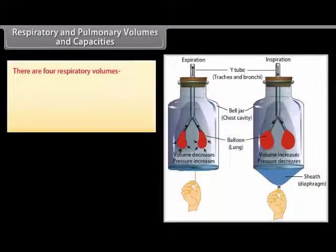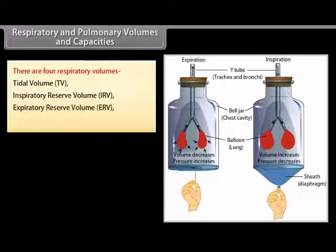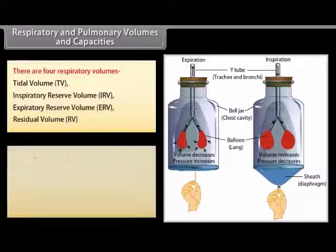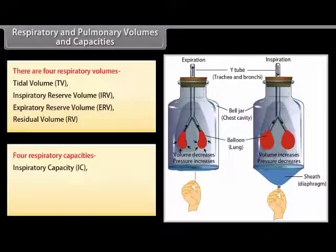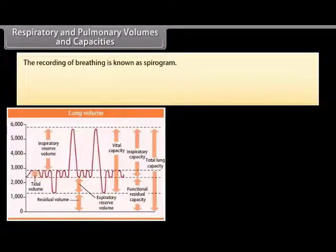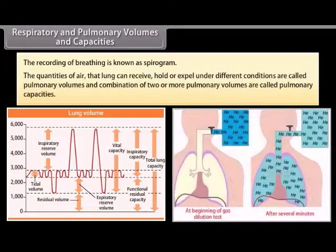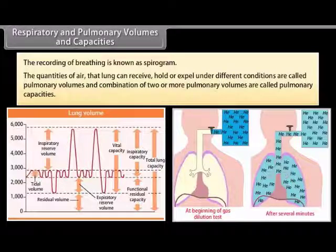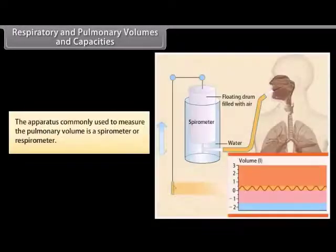There are four respiratory volumes: tidal volume, inspiratory reserve volume (IRV), expiratory reserve volume (ERV), and residual volume (RV). There are also four respiratory capacities: inspiratory capacity (IC), functional residual capacity (FRC), vital capacity (VC), and total lung capacity (TLC). The recording of breathing is known as a spirogram. Combinations of two or more pulmonary volumes are called pulmonary capacities, and the apparatus used to measure pulmonary volume is a spirometer or respirometer.